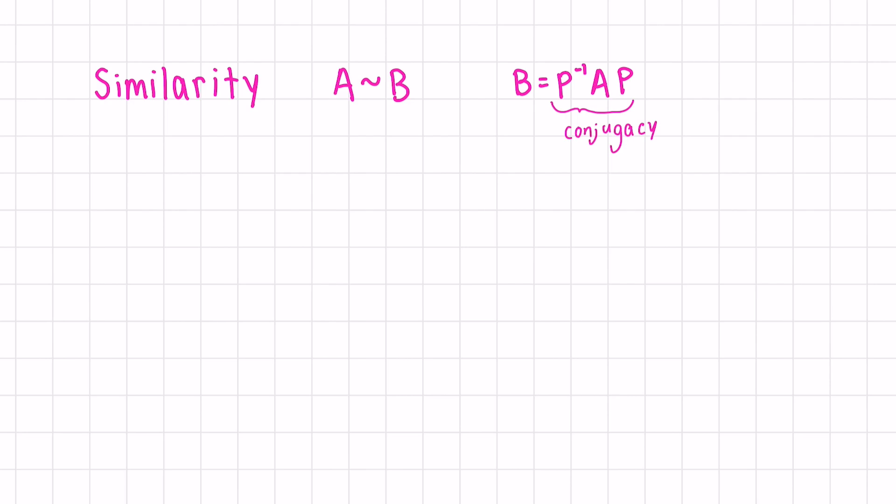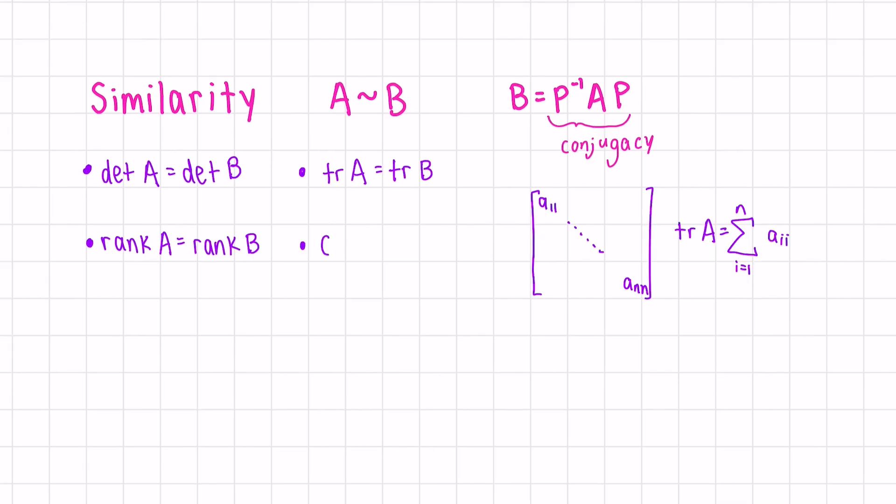What do these similar matrices have in common? They have the same determinant, the same rank or number of leading ones. They have the same trace, which is the sum of the diagonal entries. They also have the same characteristic polynomial, which means they have the same eigenvalues, but generally they have different eigenvectors, as they aren't usually the exact same matrix.